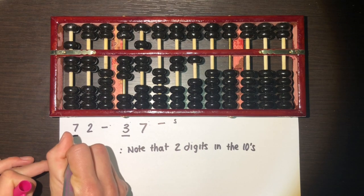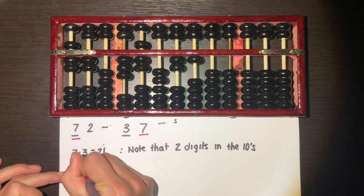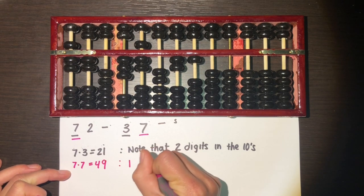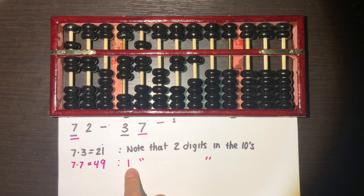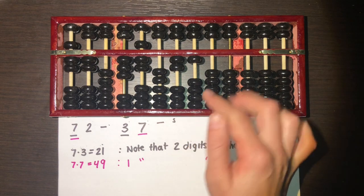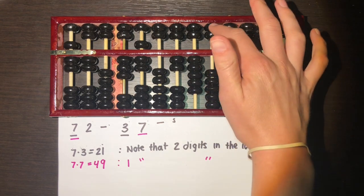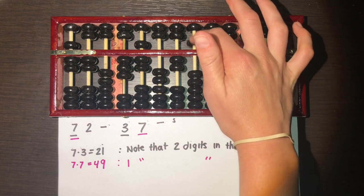Then we use seven times the second digit of our second number, which is also seven: seven times seven equals 49. We have one digit in the tens spot, so the difference is one, meaning we move one to the right of our starting spot and place 49 — four tens and nine ones. I'll carry those five beads down and mark it accordingly.